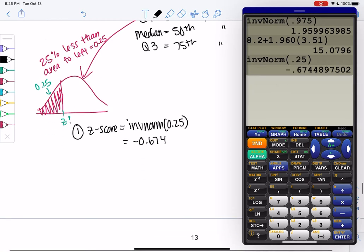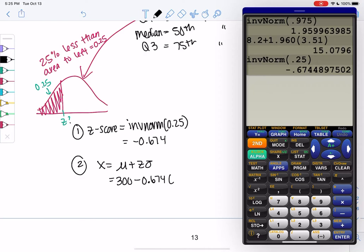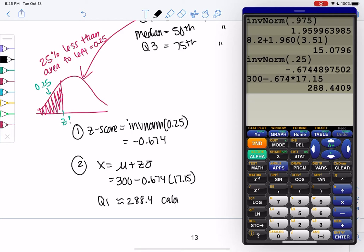And then we'll de-standardize, which is x equals mu plus z sigma. So mu was 300. It turns into subtraction because the z-score is negative, minus 0.674 times 17.15. And we get 288.4. And this was calories in a cupcake.